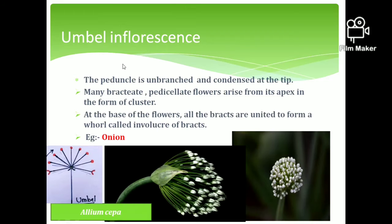The next subtype is the umbel inflorescence. The umbel inflorescence is unbranched and condensed at the tip. The apex bears many pedicellate flowers. At the base of the flowers, all the bracts are united to form a whole called the involucre of bracts. This type of inflorescence is seen in onion, whose scientific name is Allium cepa.